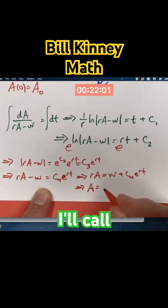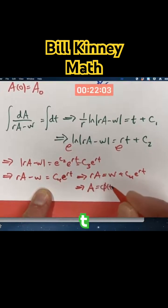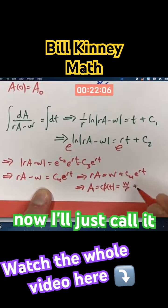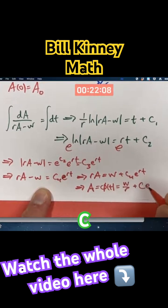A is a function of T, which I'll call phi of T, is W over R plus, now I'll just call it C, E to the RT.